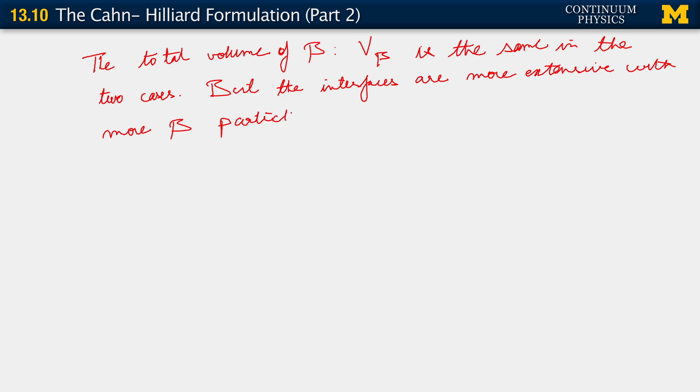But, the length, well, instead of length let me say the interface. The interfaces are more extensive. The interface is more massive with more beta particles. And therefore, there is a higher penalty.